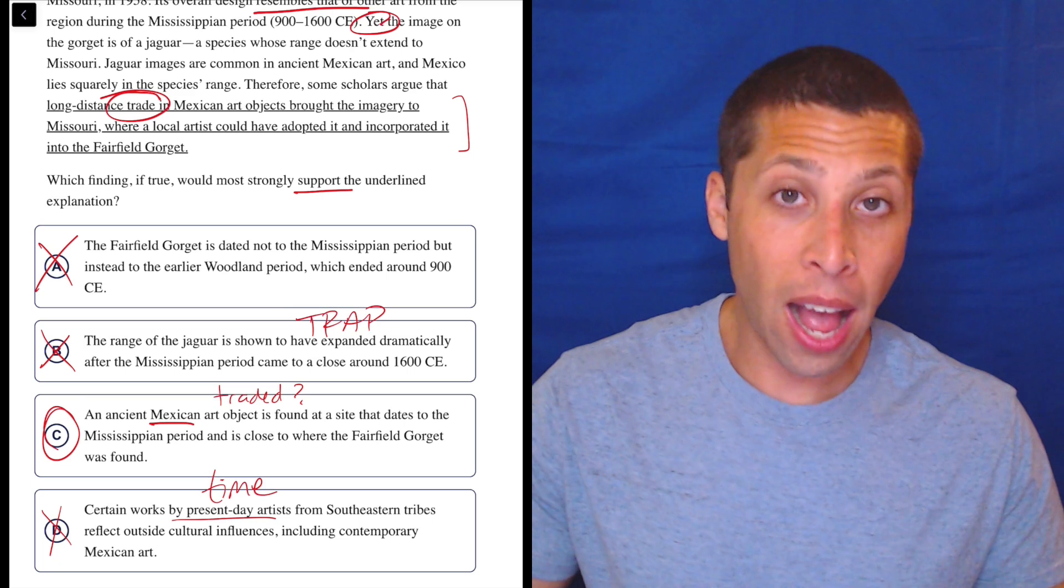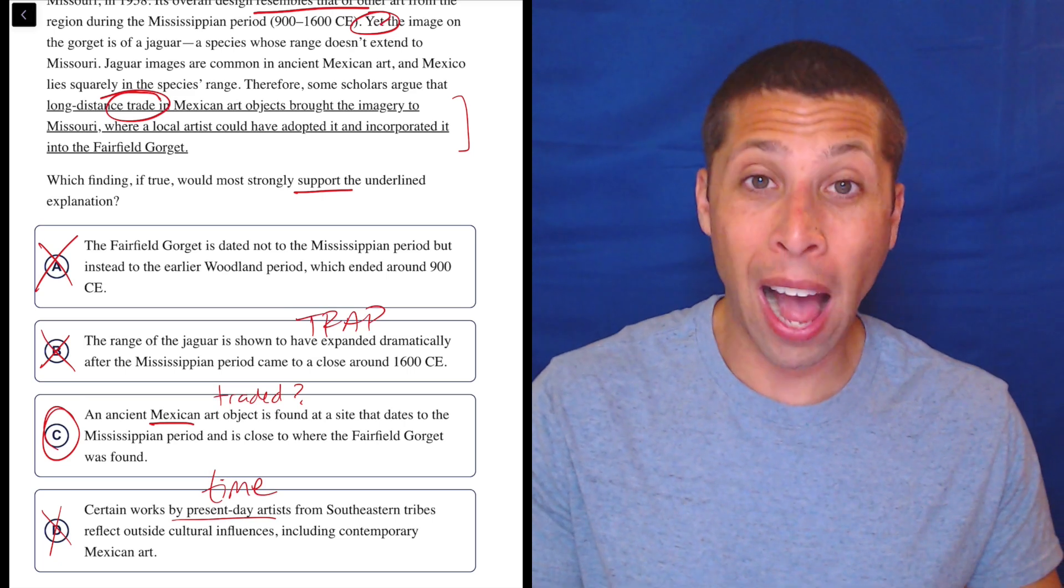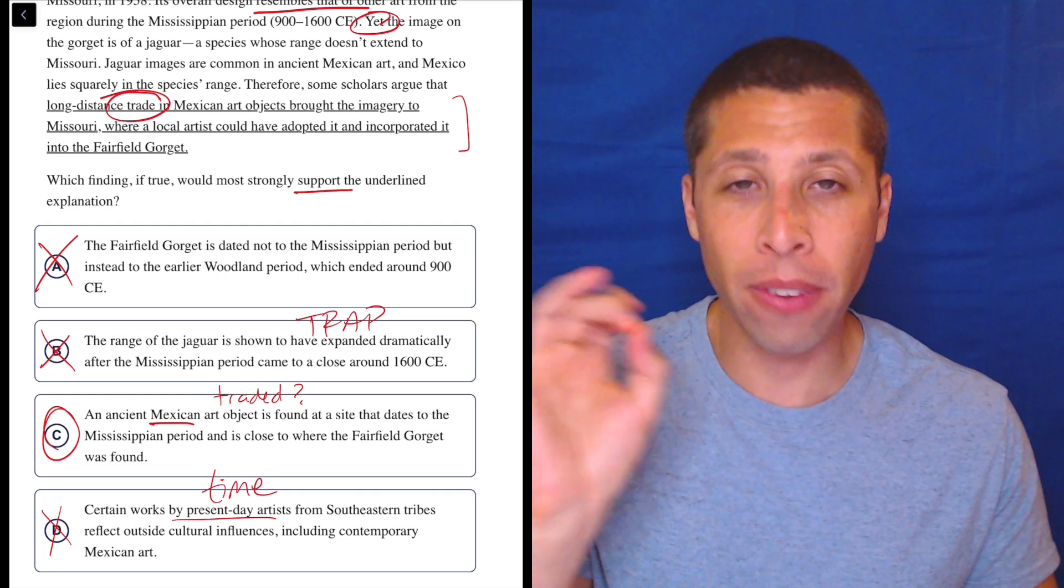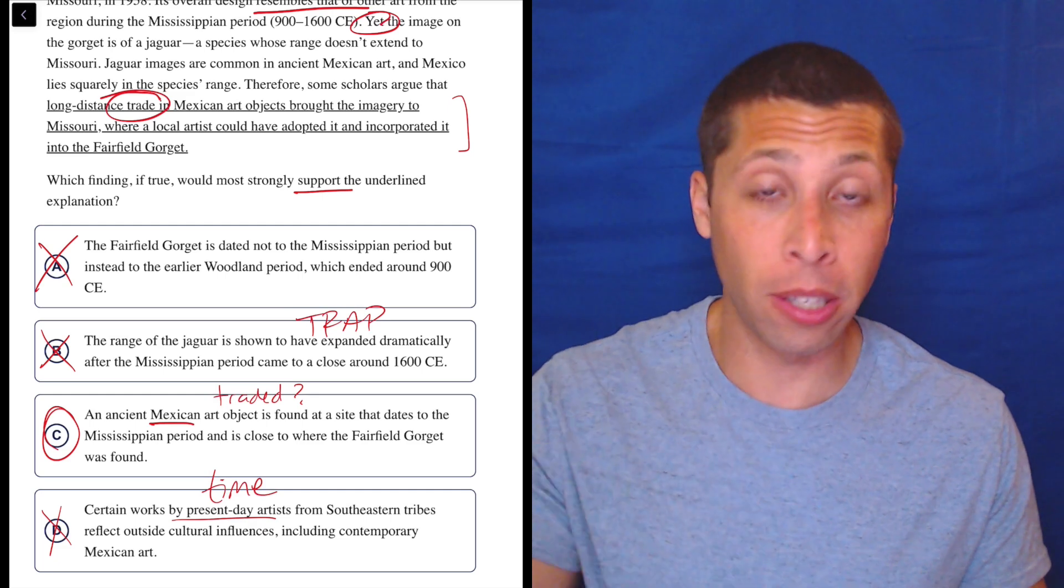So look, C was not what I would have said is like my ideal answer here. I really wanted them to, in some way, very clearly talk about trade between these two groups.